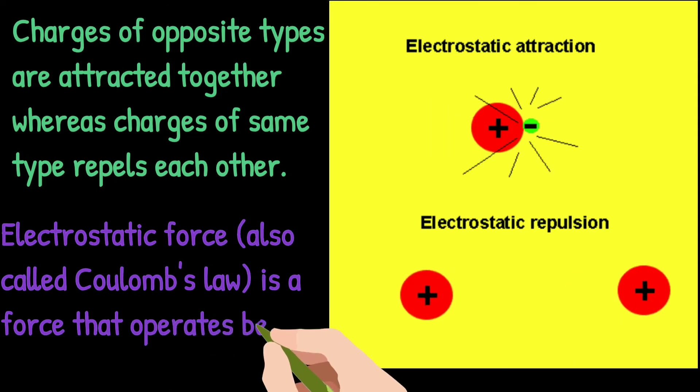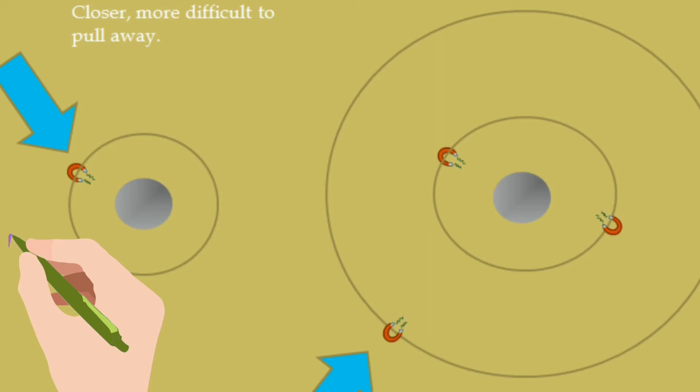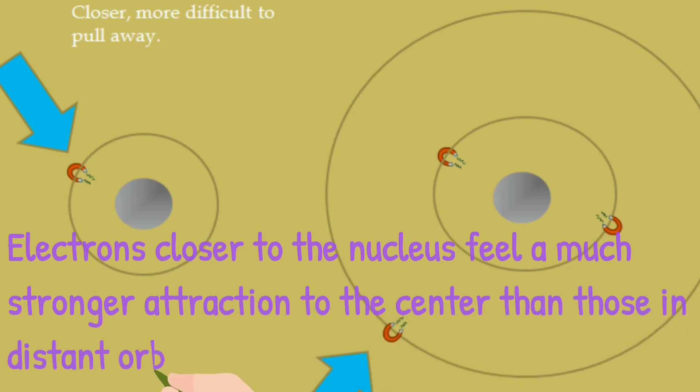Electrons closer to the nucleus feel a much more attraction to the center than those in the distance or outer orbit. The outermost electrons of an atom are called the valence electrons. These require the least amount of force to be free from an atom.